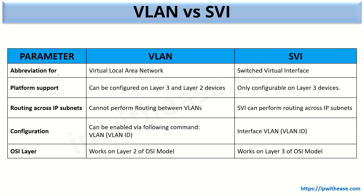This table showcases the difference between VLAN and SVI. The first parameter is abbreviation: VLAN stands for virtual local area network and SVI stands for switch virtual interface. Second is platform support: VLAN can be configured on any layer 2 or layer 3 switch, whereas SVI can only be configured on layer 3 switches. For routing across IP subnets or VLANs: VLANs cannot perform routing between different VLANs, however SVI has the capability to perform routing across various IP subnets and VLANs via the same layer 3 switch.